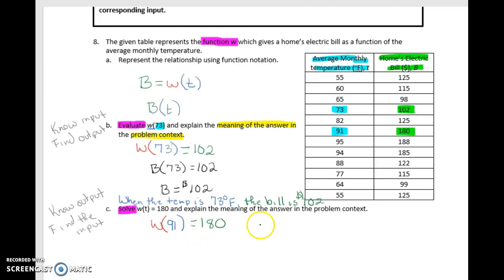We can also write it using the shortened version, which would be B of 91 equals 180. Or we could simply say that T, because that's what we're trying to find, because this is what's unknown to us, is the T. Where what we do know is the output. So we're trying to find the input. And so we would say T equals 91 degrees Fahrenheit, if we wanted to answer it in that way. So any of these three options would be acceptable.